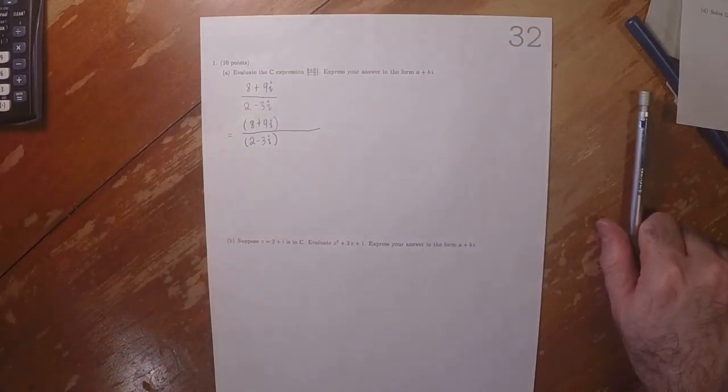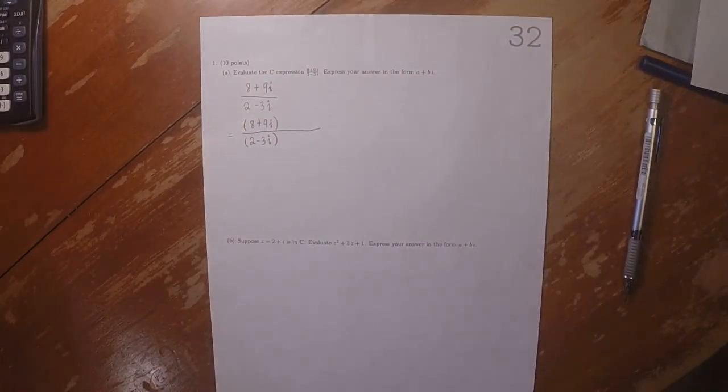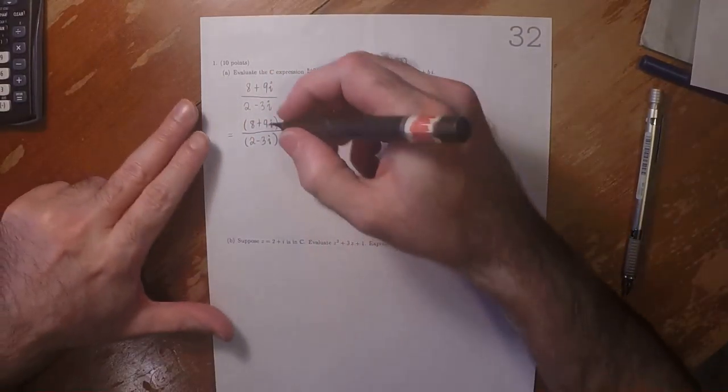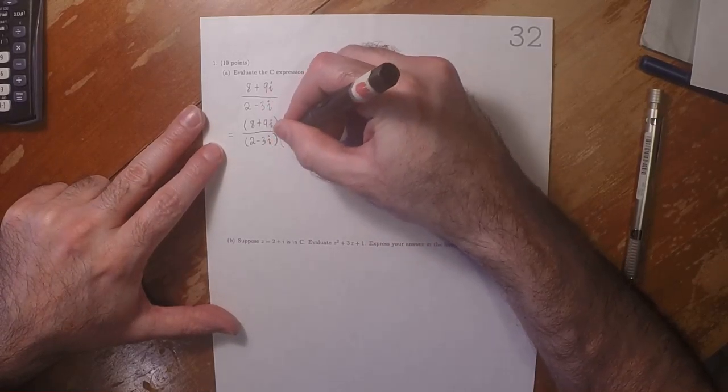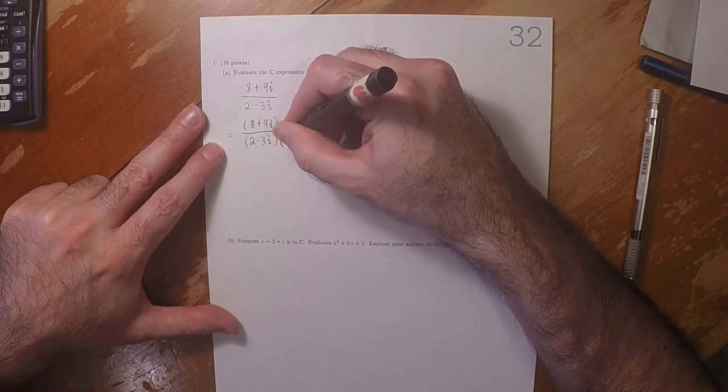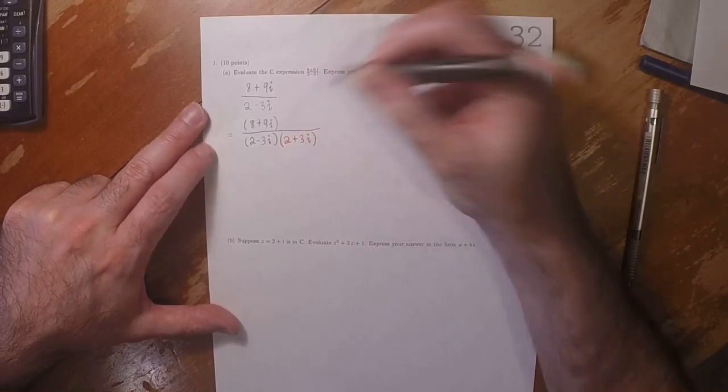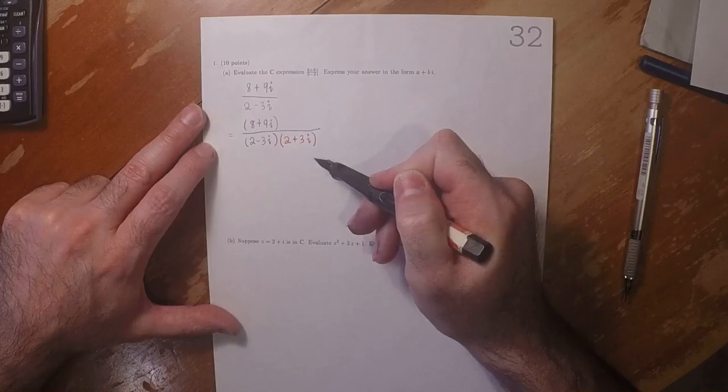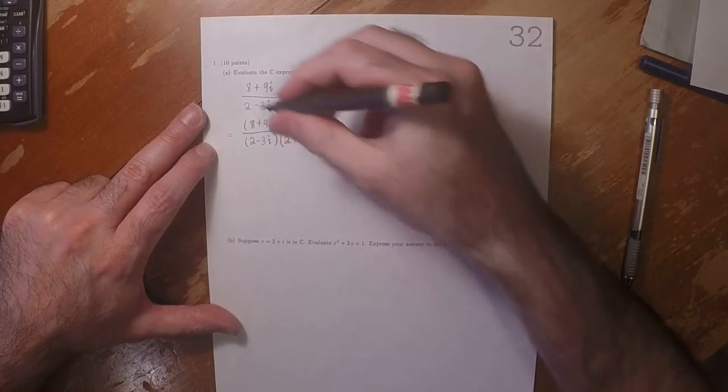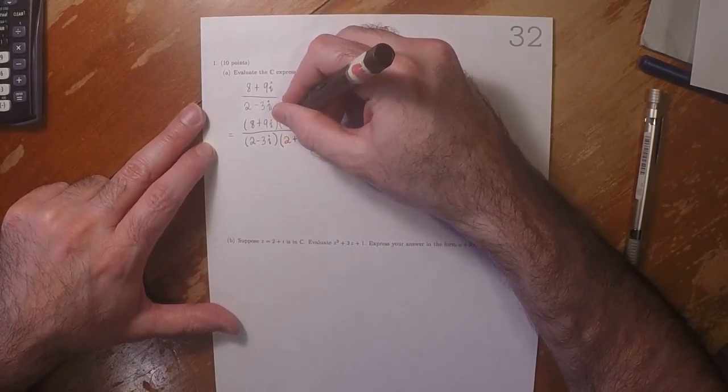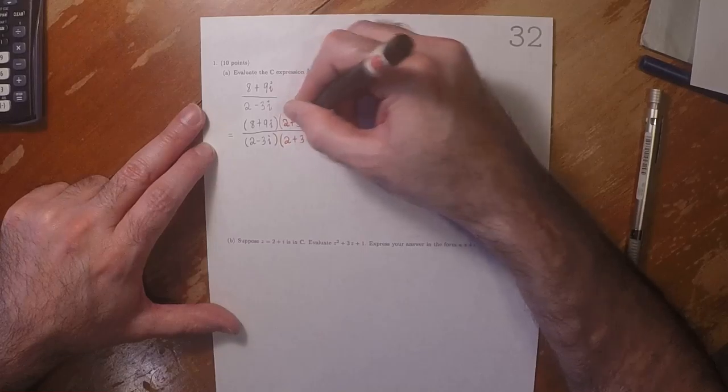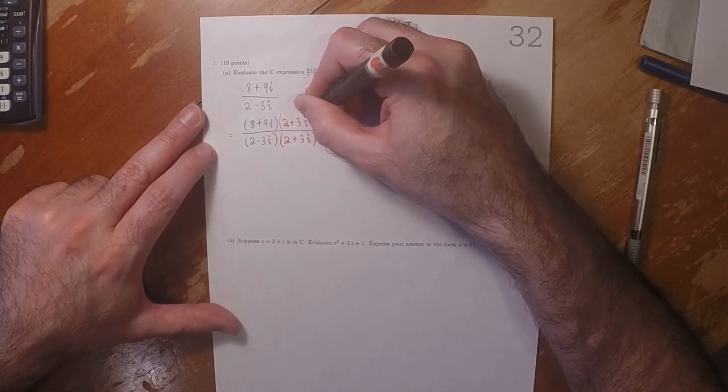The way to overcome that is to multiply that denominator by its conjugate, which will rotate that number back onto the real line. But if we put that 2 plus 3i in the denominator, then we must also put 2 plus 3i in the numerator.